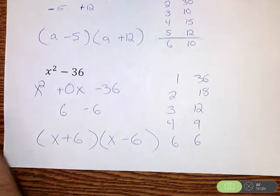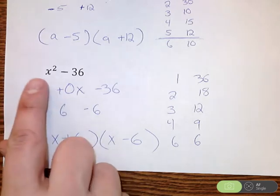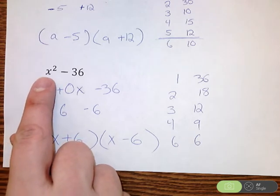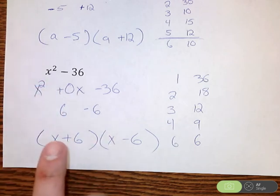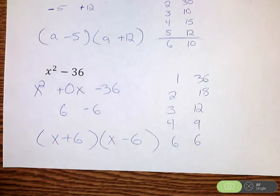And that is a quick video on factoring. And that only works when the leading coefficient, the number in front of your squared term is 1. That's the only way we can do two numbers multiplied to the back, add to the middle.